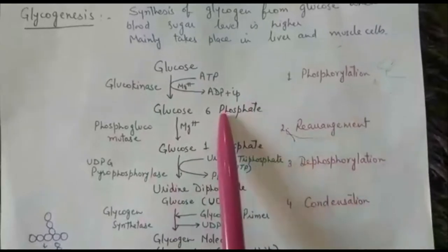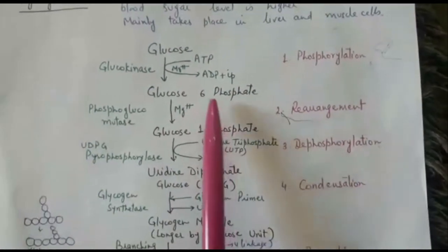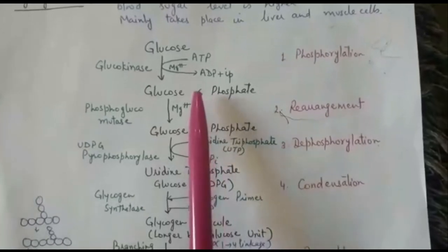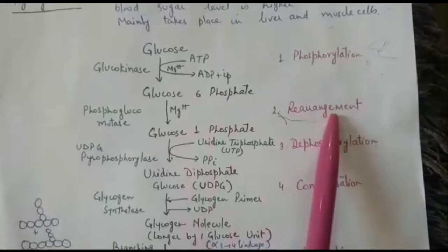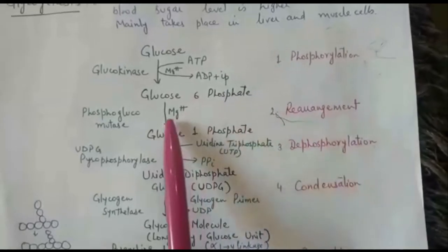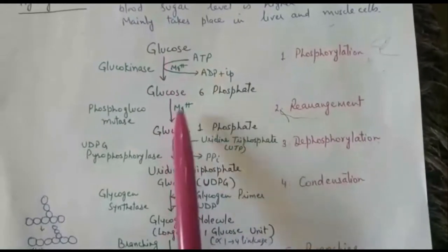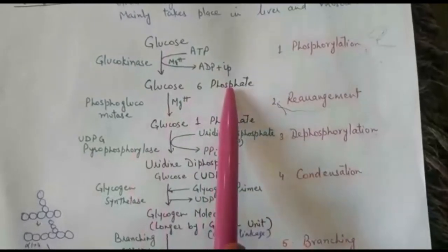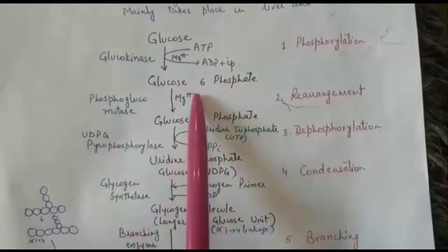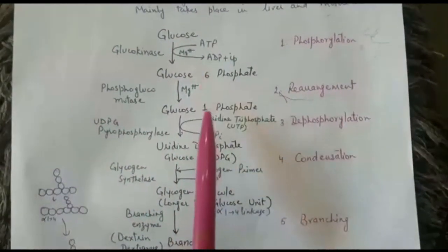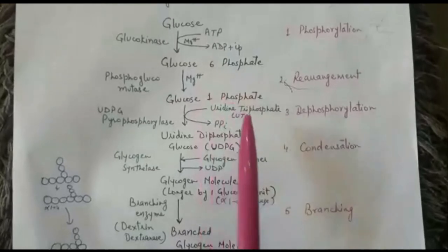In the second step, in glucose-6-phosphate, the phosphate group shifts from the sixth carbon to the first carbon. This process is known as rearrangement and requires the presence of magnesium ions, just like the first step. The name of the enzyme is phosphoglucomutase, because it involves rearrangement — shifting from the sixth position to the first position.